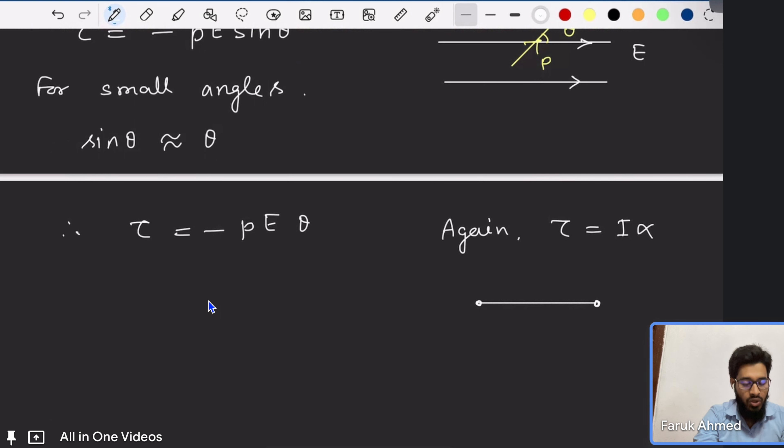Okay, now again we know tau is equal to moment of inertia into alpha. Here they have given a light rod of length l. First of all I'll draw one rod - this is light rod with both ends having charges.